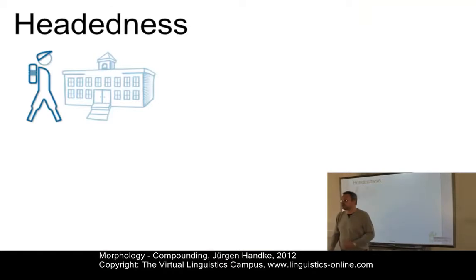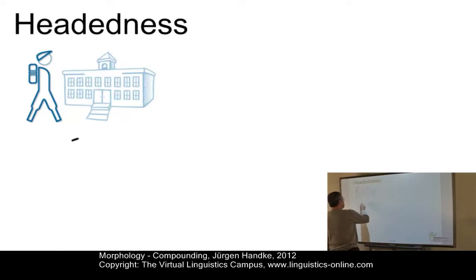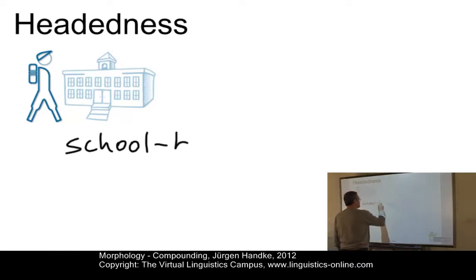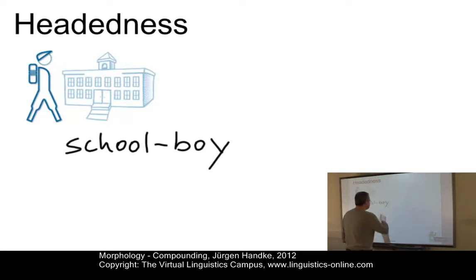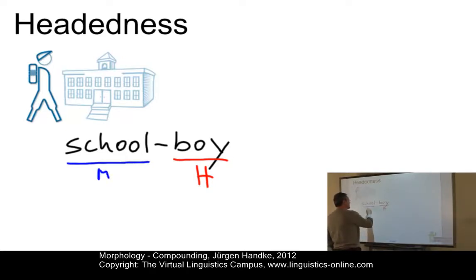Let's start with a classification. Like other constituents, compounds can be defined as consisting of a head and a non-head or modifier. Let's look at an example: the compound 'schoolboy'. The head is 'boy', whereas the modifier is the item 'school'.